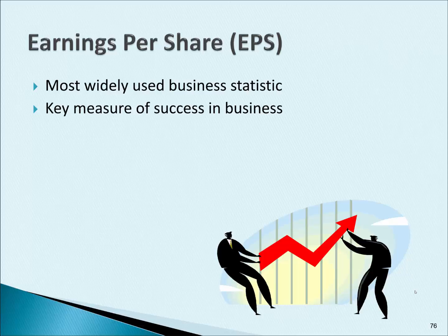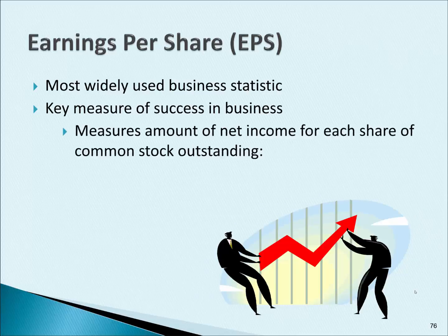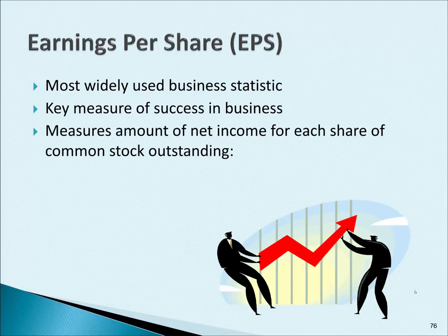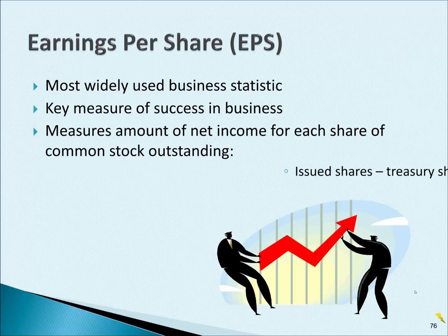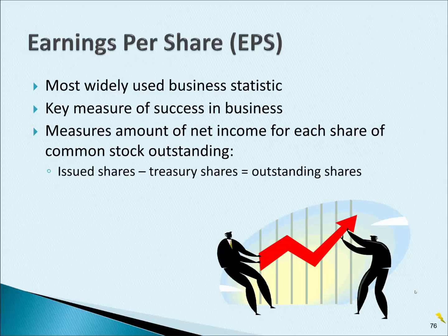Earnings Per Share is really Earnings Per Common Share, but no one ever calls it that. You do need to realize that it's per common share. It's measuring the amount of net income or profit for each share of common stock outstanding. When we calculate common stock outstanding, the formula is issued shares minus treasury shares.